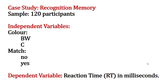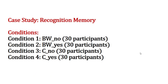The variable of interest is reaction time — how fast people recognize the images. There are two independent variables: the color of the landscape at the learning phase, whether it was black and white or a color image, and the variable match, meaning whether there is a match between the color presented in the learning phase and the recognition phase. Both variables have two values and are nominal. The dependent variable is reaction time, and 120 participants were randomly assigned to each condition, so 30 participants per condition.